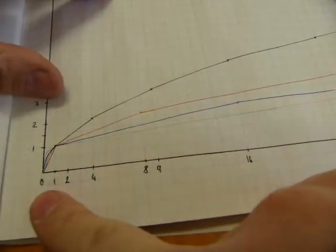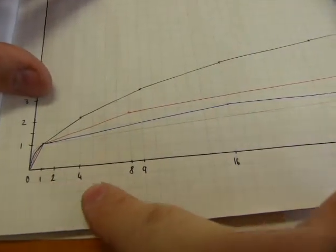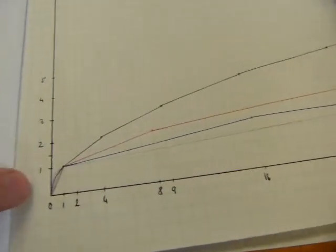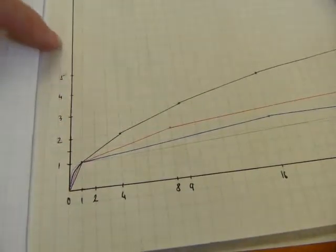And on the horizontal axis, you can see numbers 0, 1, 2, 4, 8, 9, 16, whatever. And here you can see other numbers, 1, 2, 3, 4, 5.